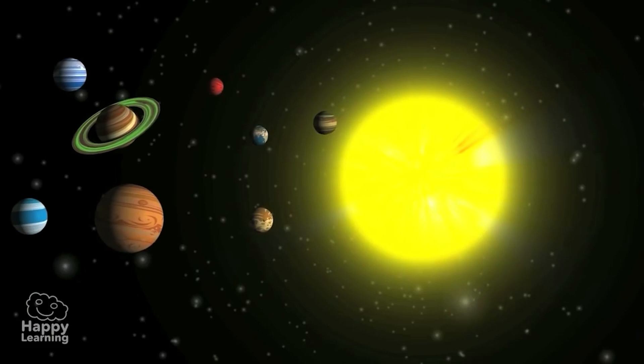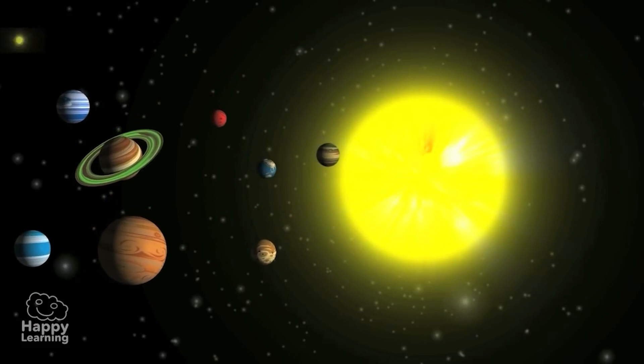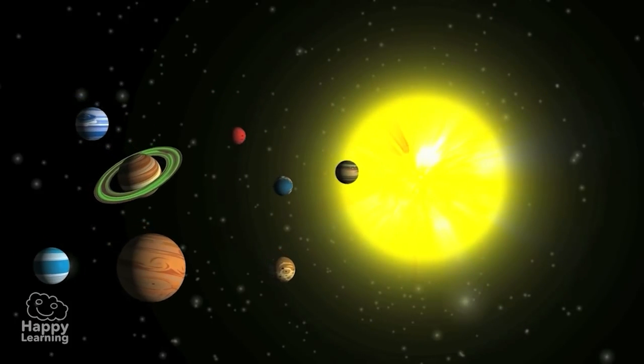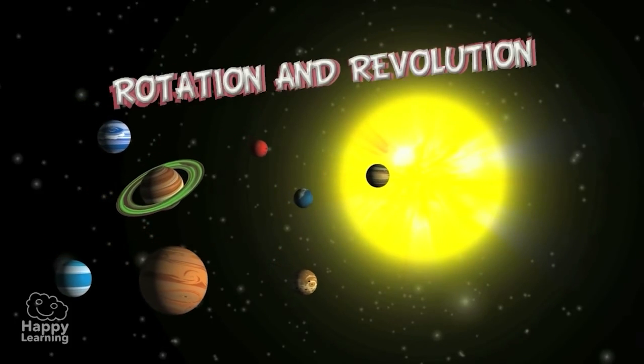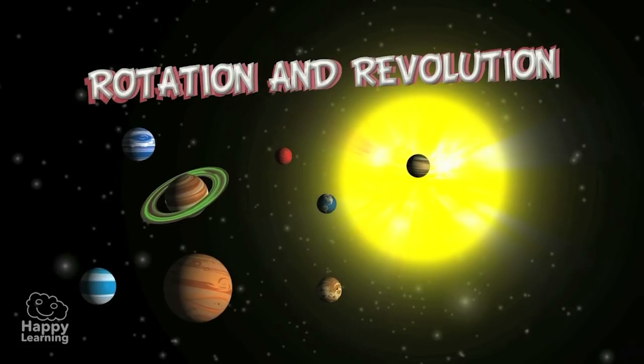Like other planets of the solar system, the Earth moves in two different ways. One is called rotation and the other is called revolution.